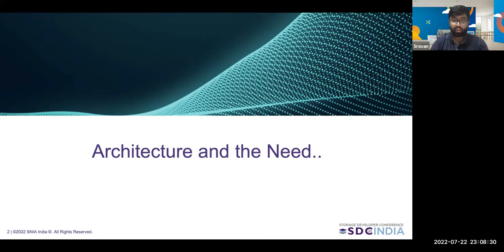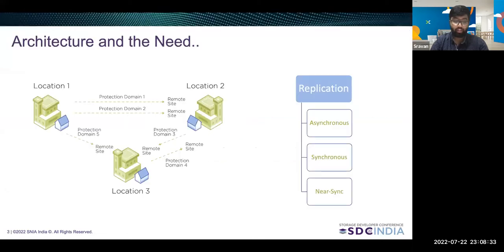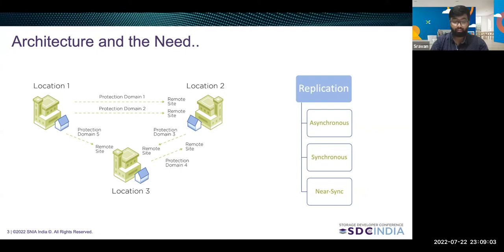As part of Neutronics, we offer three flavors of replication. This depends on the RPO, or the recovery point objective, which is the amount of data that we are willing to lose. Based on the RPO, we have synchronous replication where the RPO is 0 seconds, asynchronous replication where the RPO is 1 hour, and finally near-sync replication where the RPO is around 15 seconds.